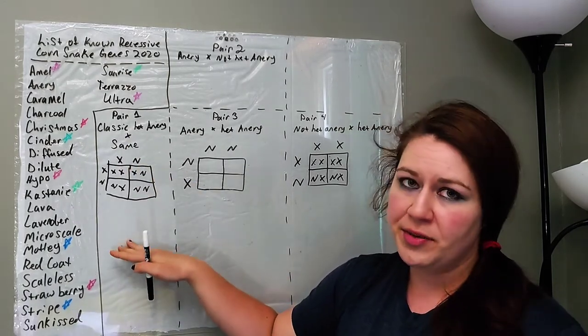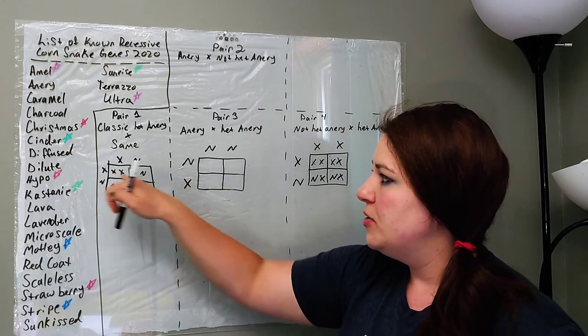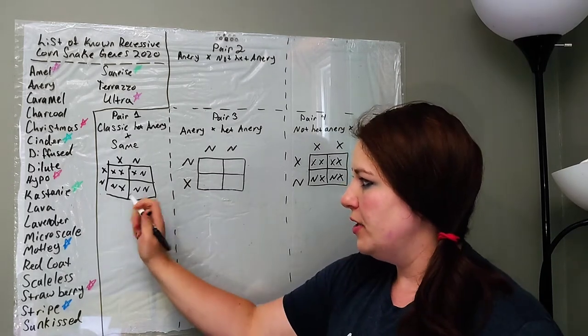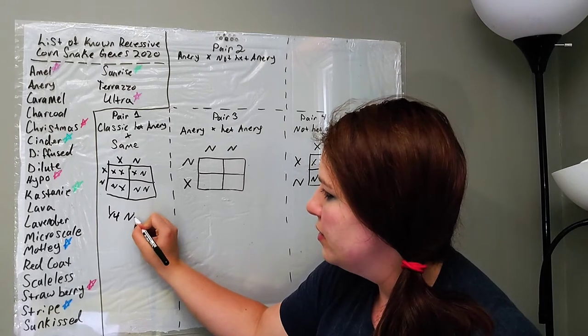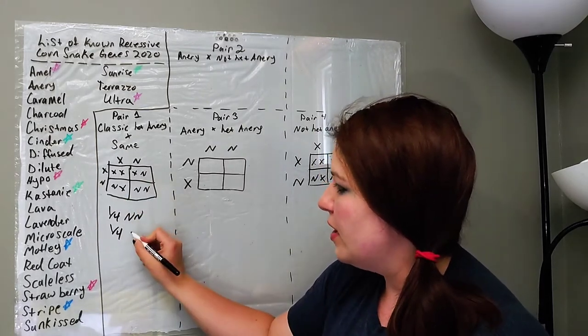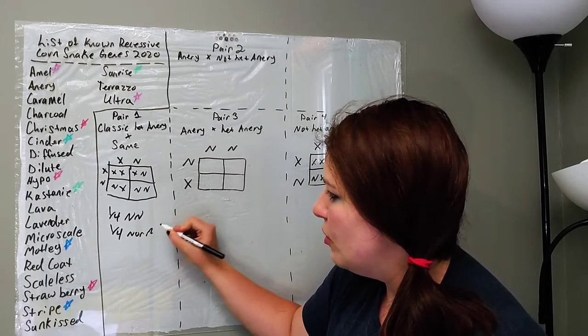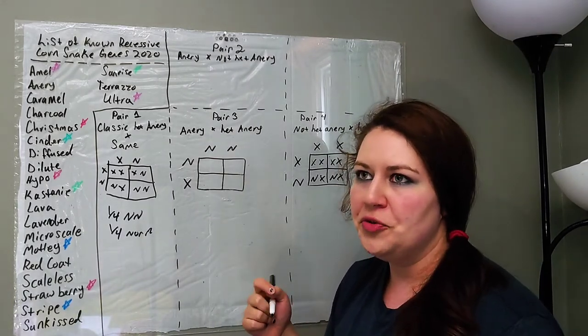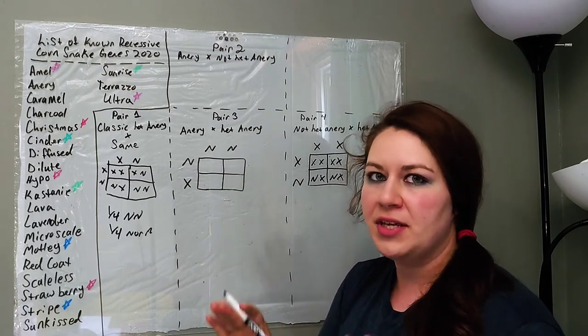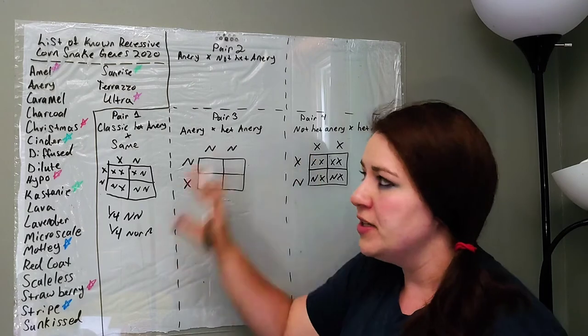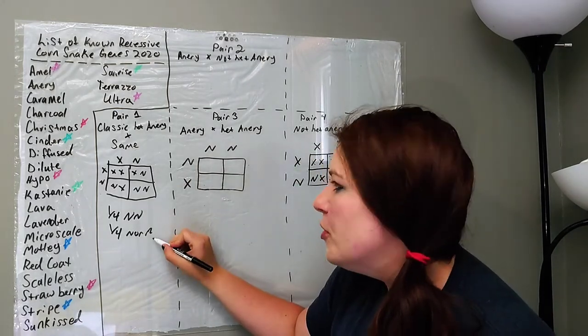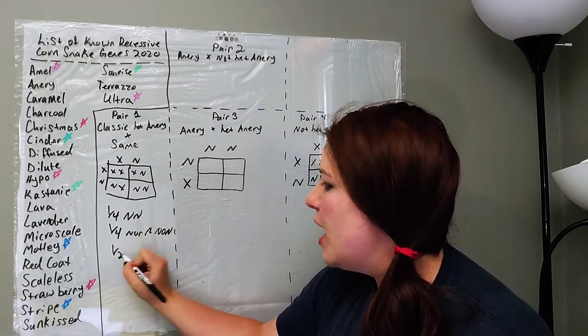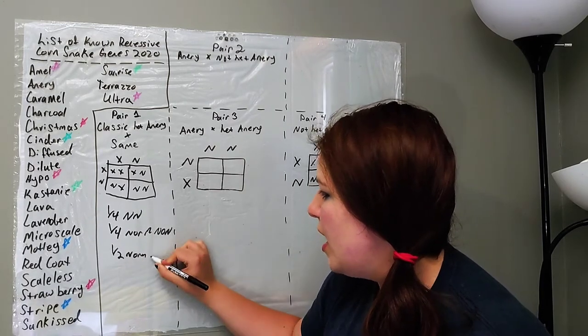So this, I went ahead and made out our Punnett Square that we had before, where we had two het aneries, XN and XN, bred together, which created one quarter aneries here, one quarter anery, one quarter with nothing. So, this would be a normal or just not having the anery gene at all. We're going to say classic or normal this time. We'll get into multiple different genes in the future, but for now, we're just going to stick with, these are going to be aneries, normals, and normals het aneries. That's all we're going to talk about on the board today. So, normal with no het, no anery. And we have one half, which are normal het anery.